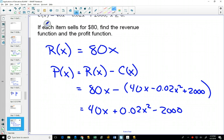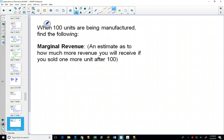But now when we start to think about marginal revenue, marginal cost, and marginal profit, what do they mean? The marginal revenue is an estimate. It's an estimate to say, if you sold one more unit after 100, how much more revenue would you bring in?